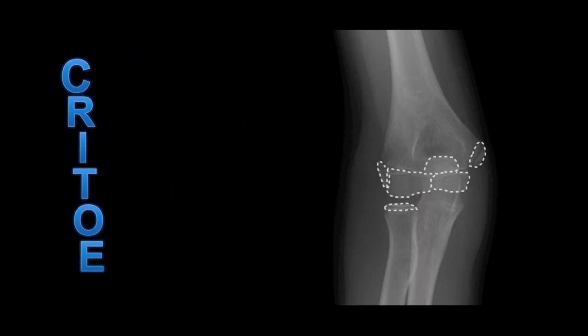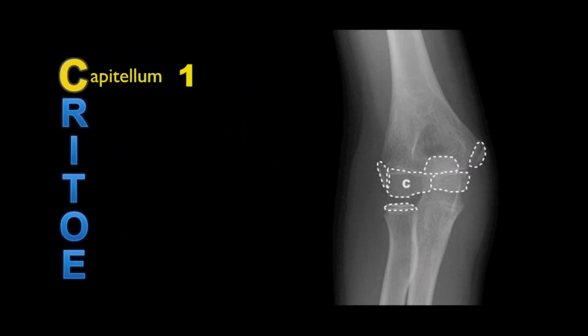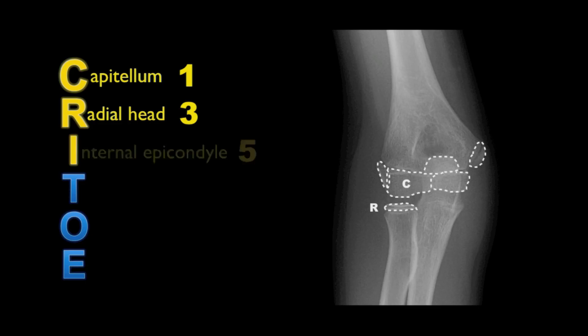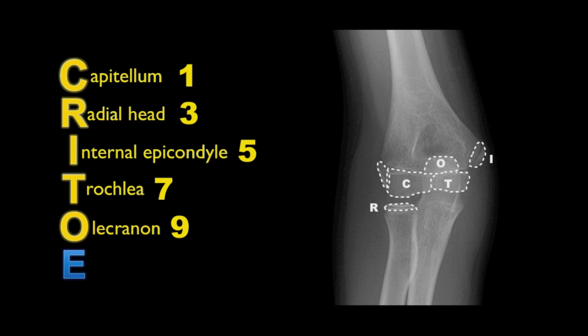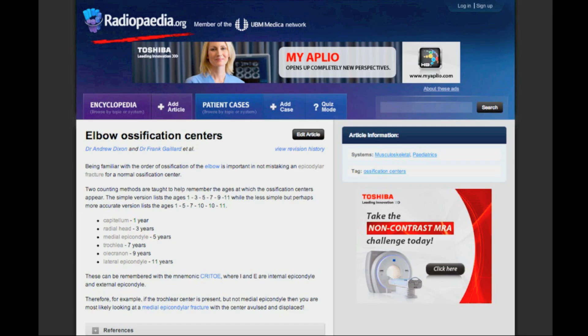So there you have CRITOE, the mnemonic for remembering the order and the names of the ossification centres around the elbow: C for capitellum, R for radial head, I for internal epicondyle, T for trochlea, O for olecranon, and E for external epicondyle. You can find out more on the radiopedia.org website.